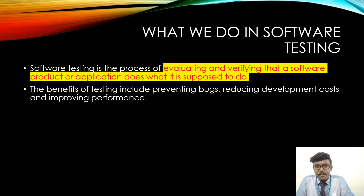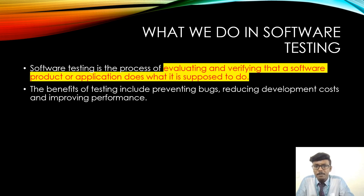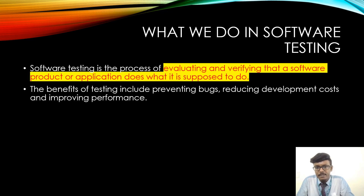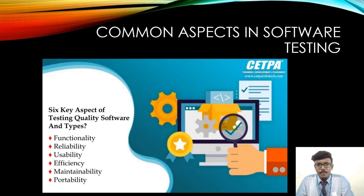If a bug is unknown, it can create severe damage. For example, in a healthcare system, scanners and equipment operate under specific sets of code. Any malfunction due to an error in the software would result in incorrect data, making it impossible to accurately diagnose a patient's condition. Similarly, when launching a rocket, even a small bug can cause enormous damage — not only in terms of cost but also in terms of human life.